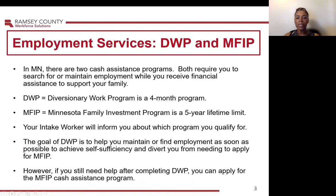Employment Services: DWP and MFIP. In Minnesota, there are two cash assistance programs. Both require you to search for or maintain employment while you receive financial assistance to support your family. DWP, Diversionary Work Program, is a four-month program. MFIP, Minnesota Family Investment Program, is a five-year lifetime limit. Your intake worker will inform you about which program you qualify for. The goal of DWP is to help you maintain or find employment as soon as possible to achieve self-sufficiency and divert you from needing to apply for MFIP. However, if you still need help after completing DWP, you can apply for the MFIP Cash Assistance Program.